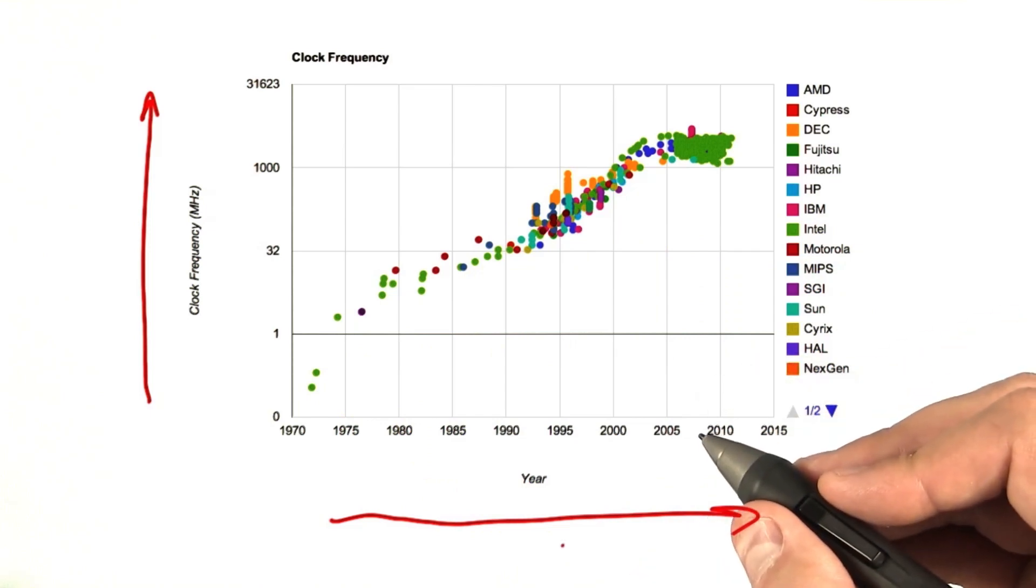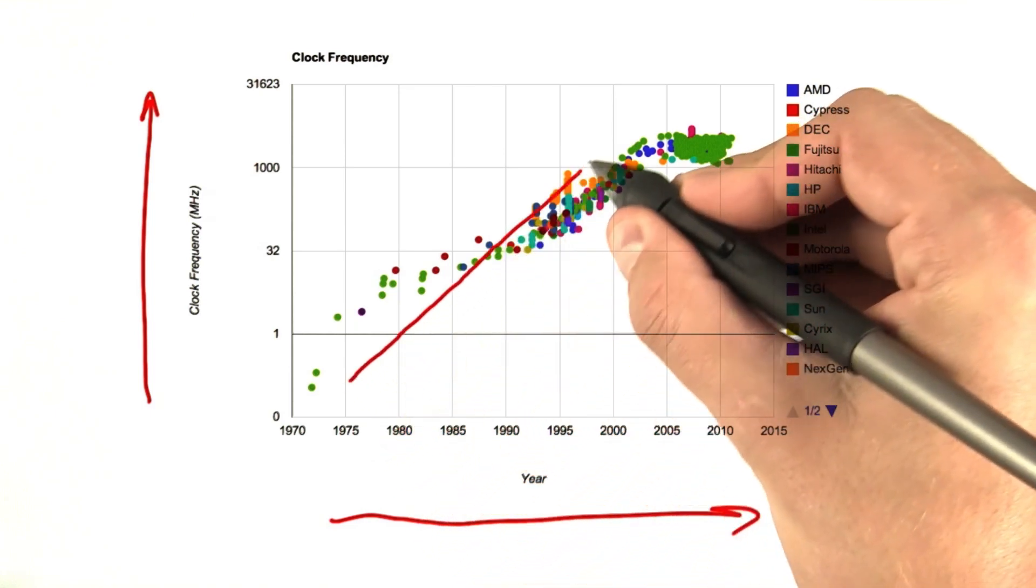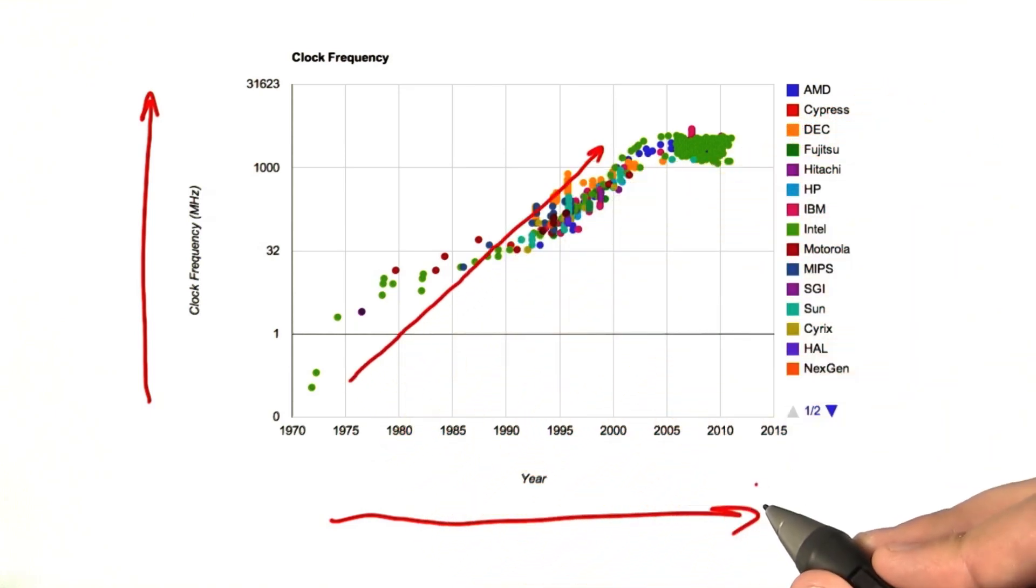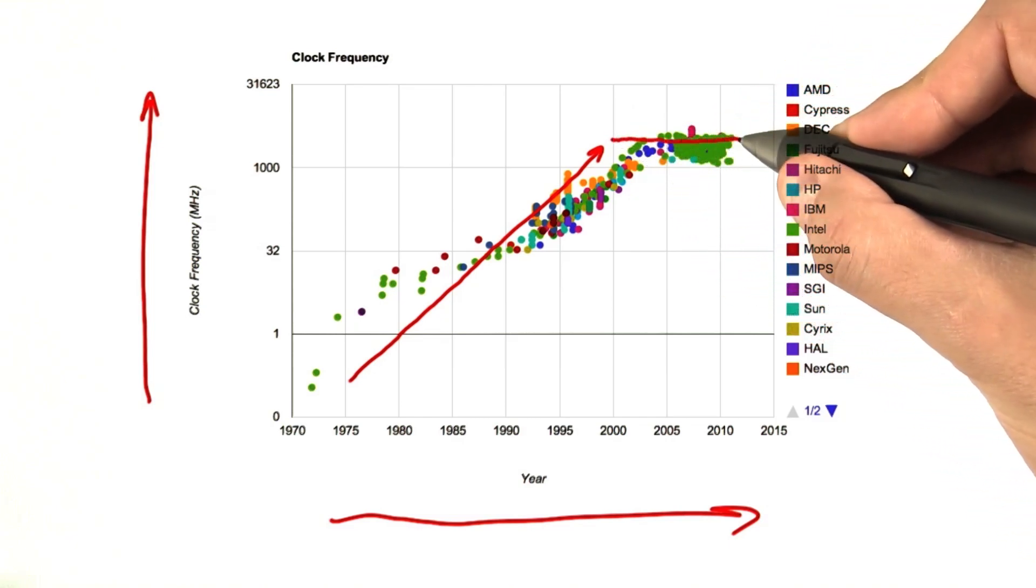Historically, one of the primary drivers of clock performance has been clock speed increases. So we see over many years, we see clock speeds continue to go up. However, over the last decade, we see that clock speeds have essentially remained constant.